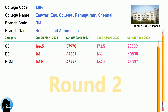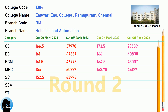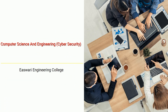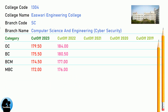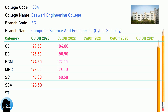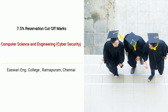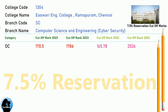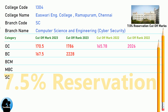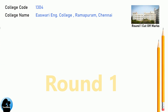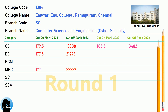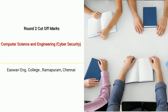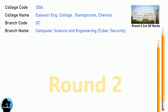DNA 9.5 Reservation Cut-Off for Eshwari Engineering College in Computer Science and Engineering Cybersecurity. DNEA 7.5 Reservation Cut-Off for Eshwari Engineering College in Computer Science and Engineering Cybersecurity. DNEA Round 1 Cut-Off and Round 2 Cut-Off for Eshwari Engineering College in Computer Science and Engineering Cybersecurity.